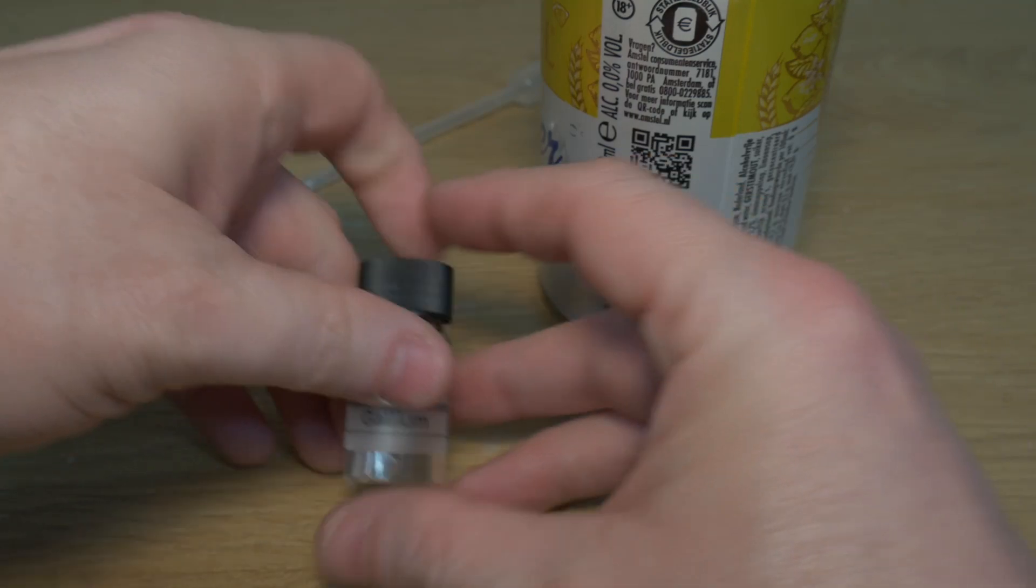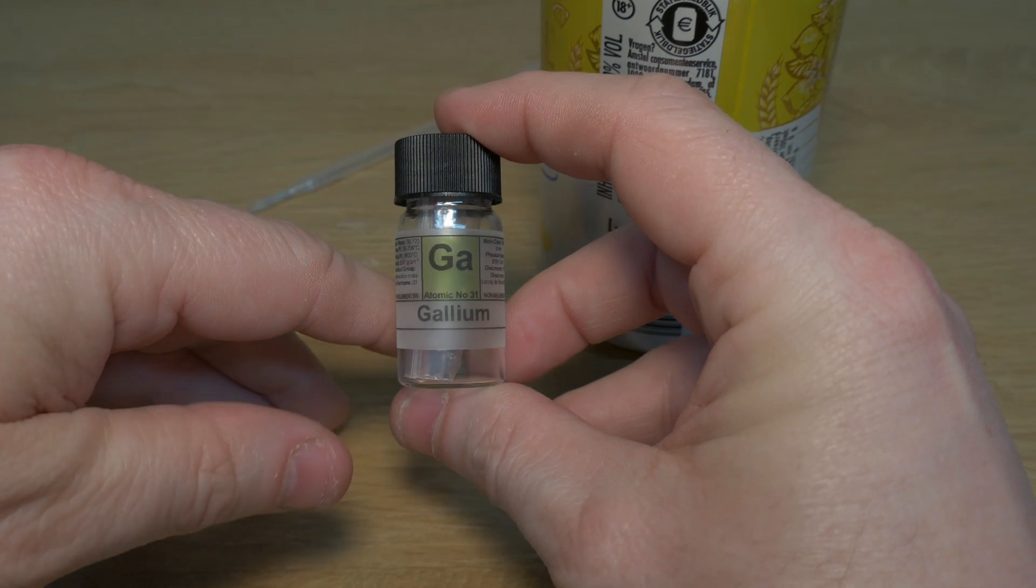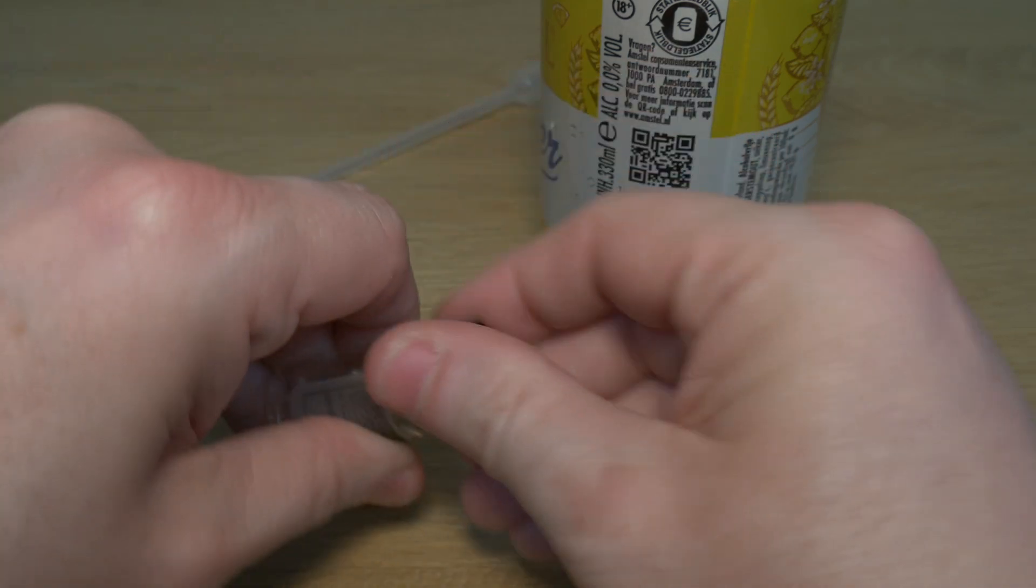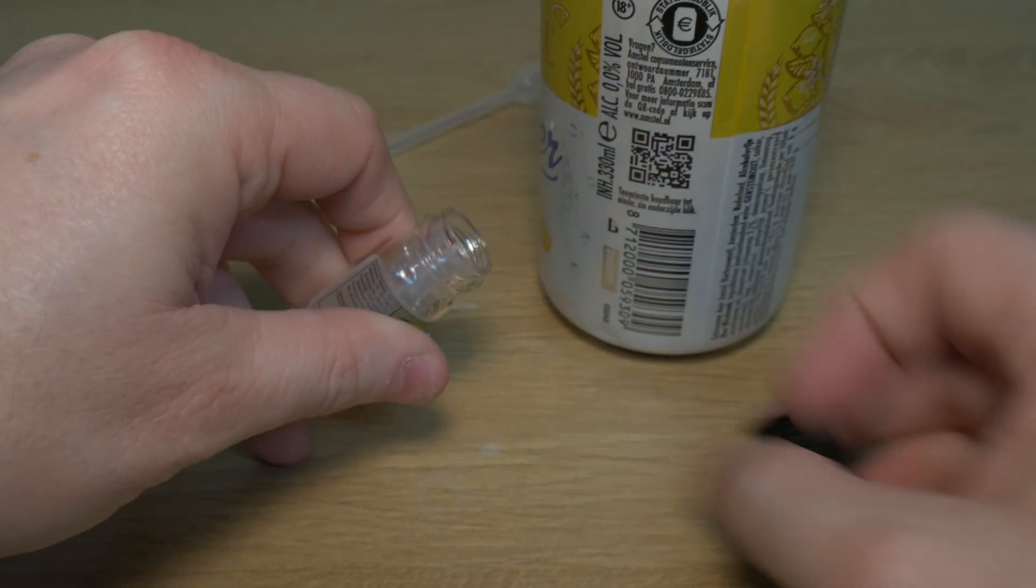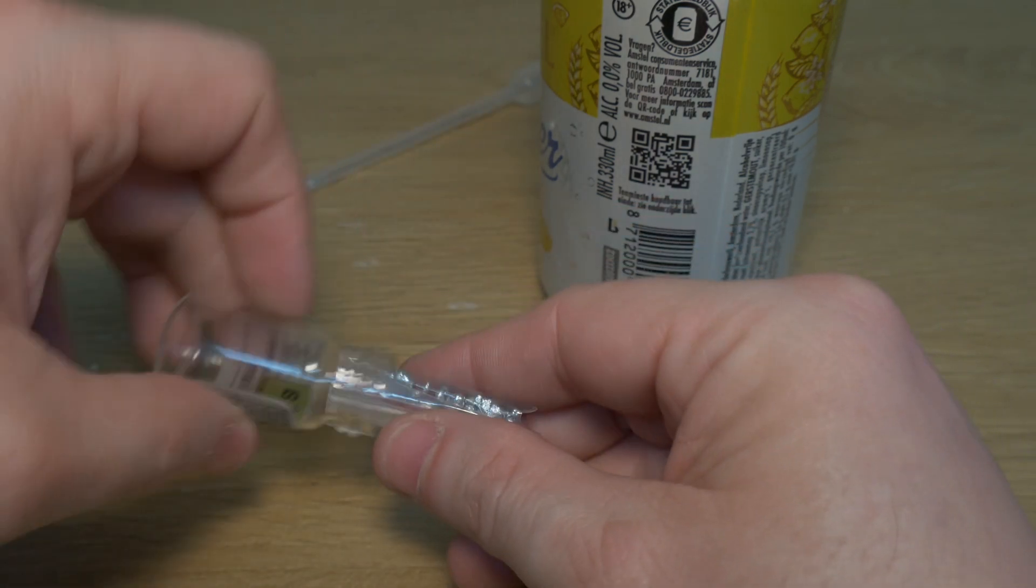So for this experiment you would need a regular soda can, empty and cleaned, a small amount of gallium metal, a few grams is more than enough, hot water to melt the gallium, sandpaper or steel wool to scratch the aluminum and gloves to keep your hands clean. And about an hour of patience.